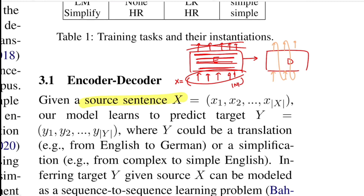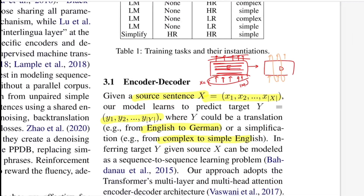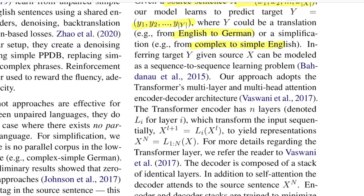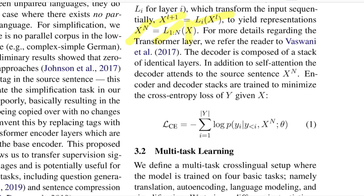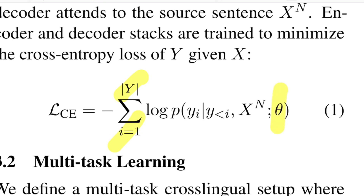Formally, given a source sentence x of n tokens, we want to predict a sequence y. This is a sequence-to-sequence task that can model translation or simplification from complex English to simple English. They adopt a transformer multi-layer multi-headed attention architecture, where the representation after the i-th layer is x_n. You minimize cross-entropy loss: for each token position in y, given model parameters, input representation, and previously generated tokens, predict the next word and back-propagate.